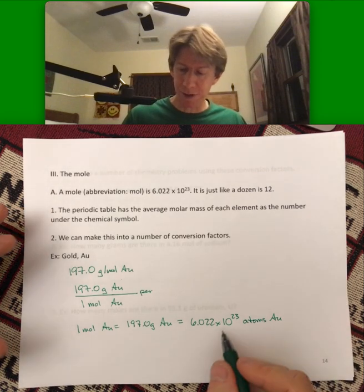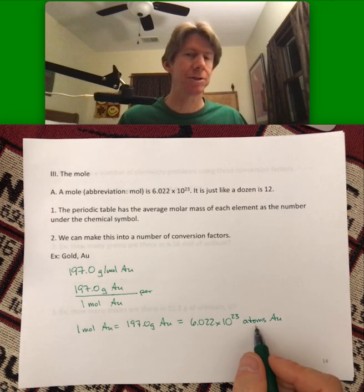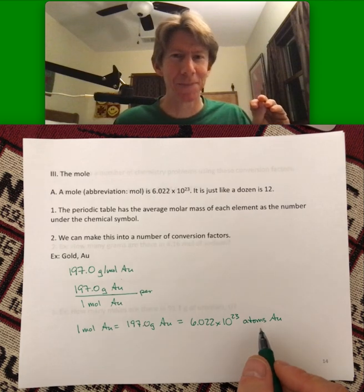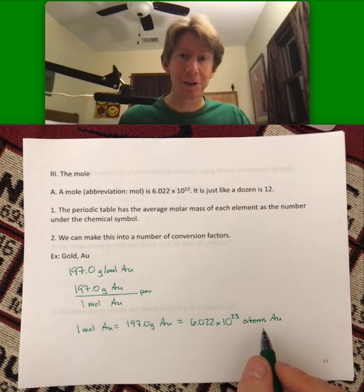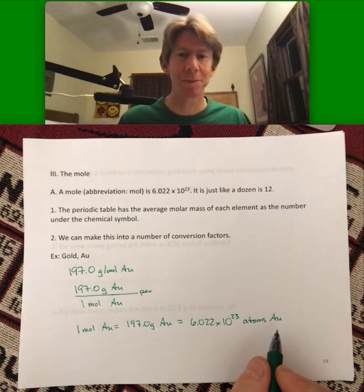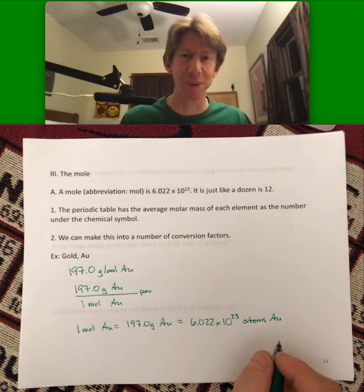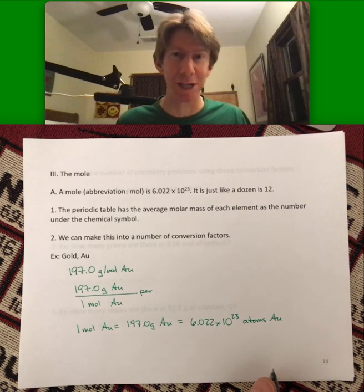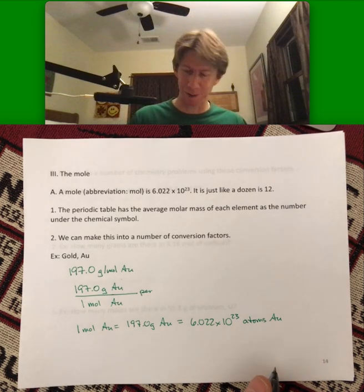Is also equal to 6.022 times 10 to the 23rd atoms of gold. And Avogadro's number can be used for atoms, molecules, ions. It can even be used for pennies. You can have a mole of pennies, and you would be unbelievably rich, although they're very heavy on a mole of pennies.